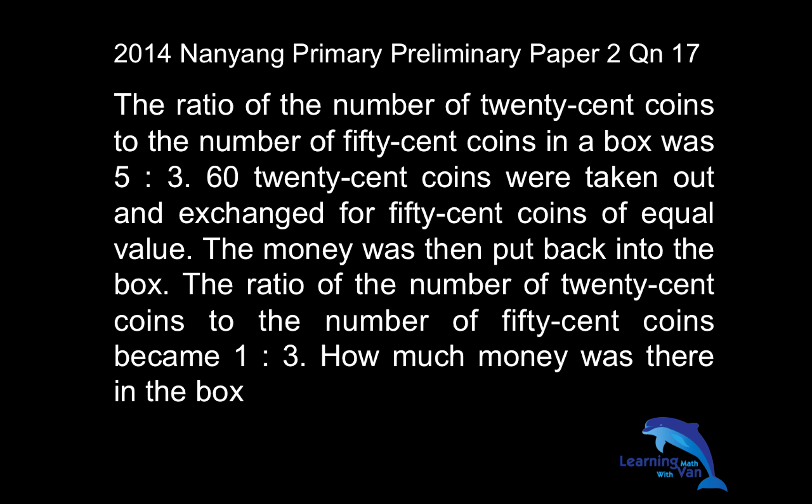60 twenty-cent coins were taken out in exchange for 50-cent coins of equal value, so the money was then put back into the box. The ratio of the number of 20-cent coins to the number of 50-cent coins became 1 is to 3. So how much money was there in the box?